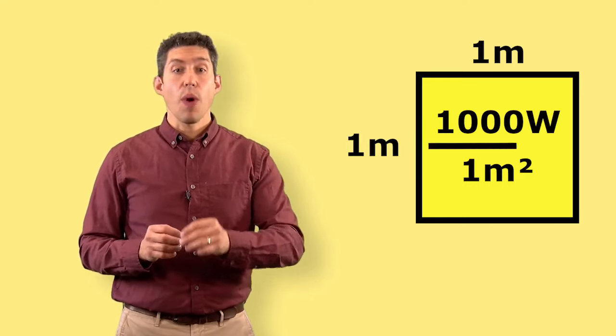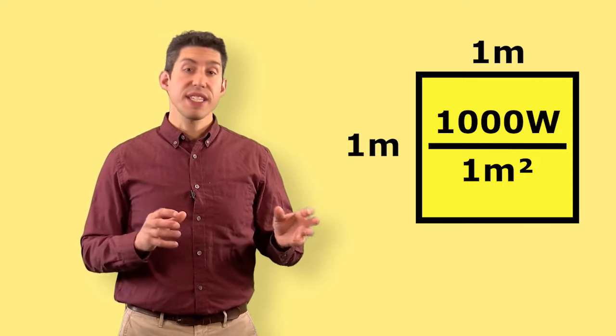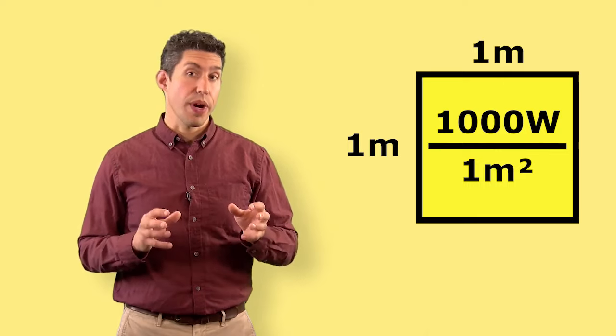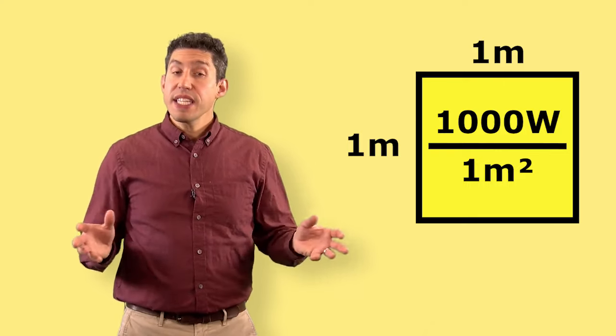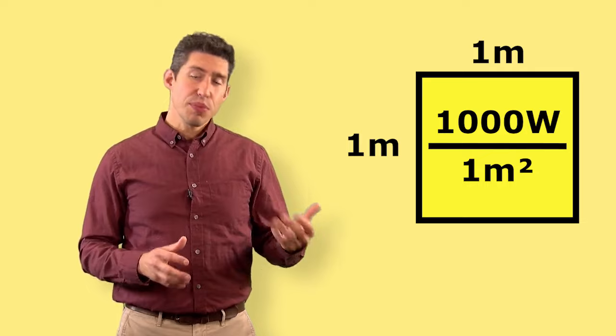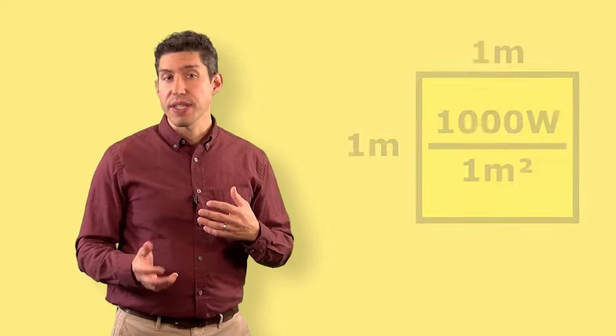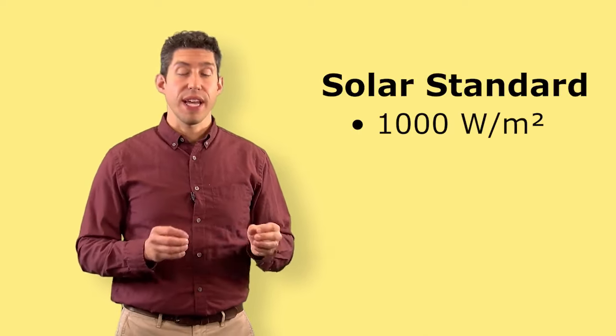Divide the 1,000 watts by one square meter gives us this definition of 1,000 watts per square meter. It's an easy number to remember and use, and it's pretty close to the actual terrestrial brightness, so we define this value as the solar standard.